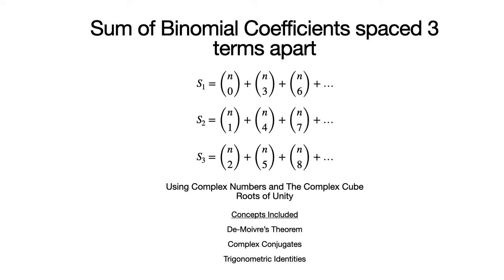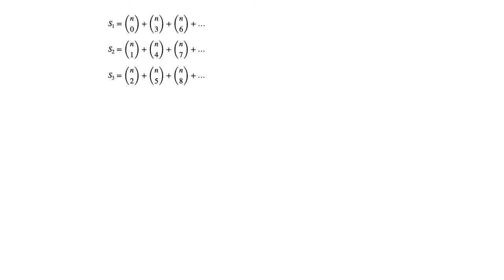Let us commence with the statement of the problem. We define three sums S1, S2, and S3. S1 equals n choose 0 plus n choose 3 plus n choose 6 and so on. S2 equals n choose 1 plus n choose 4 plus n choose 7 and so on. S3 equals n choose 2 plus n choose 5 plus n choose 8 and so on. The ellipses mean we go as far as possible in the sequence where the last term n choose r is such that r does not exceed n.